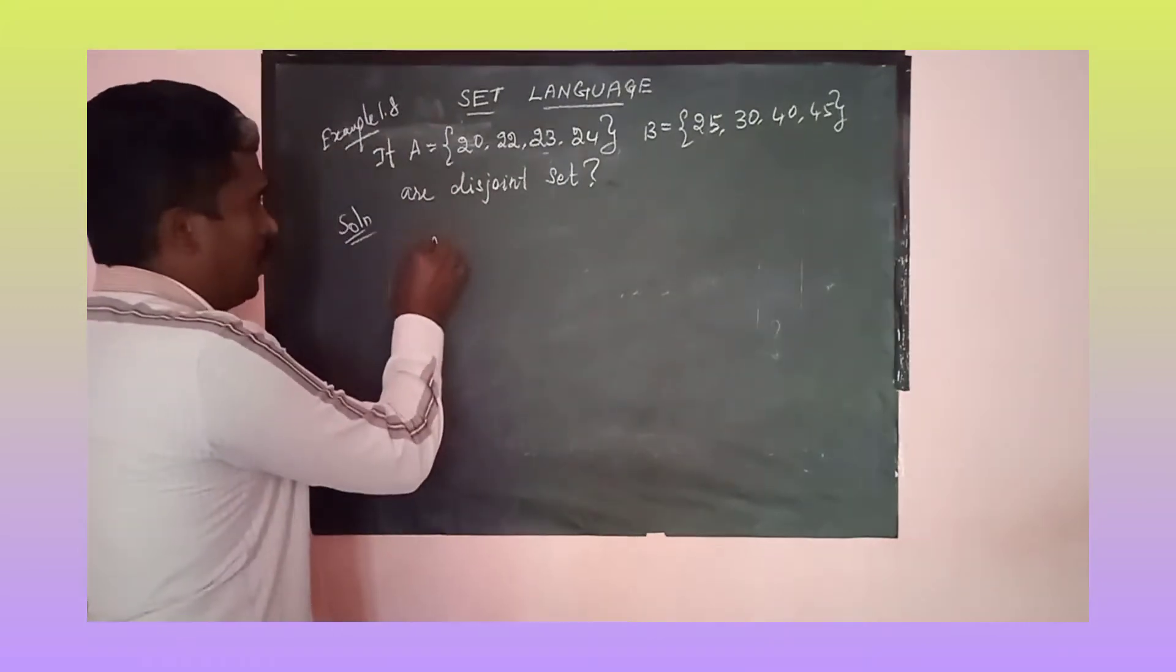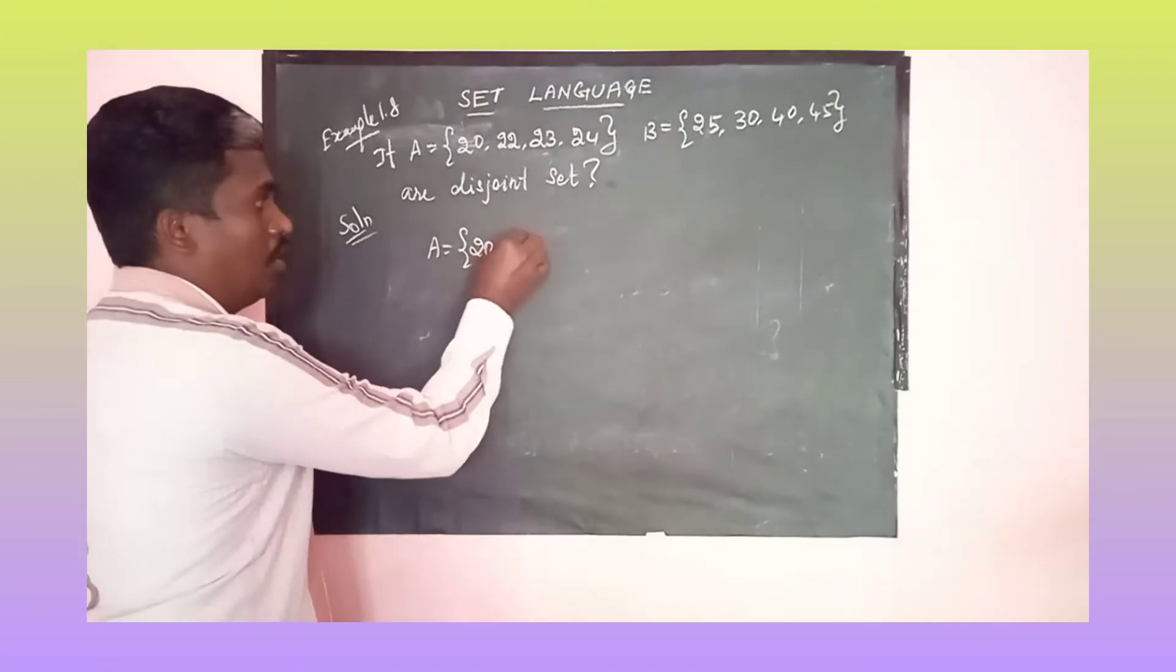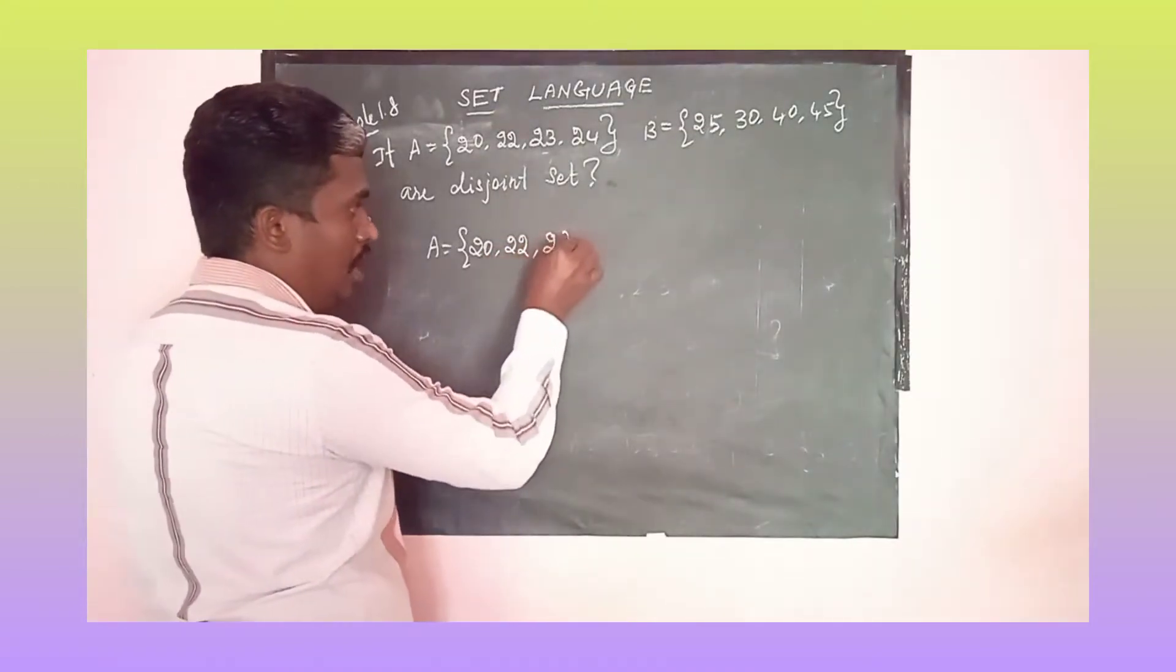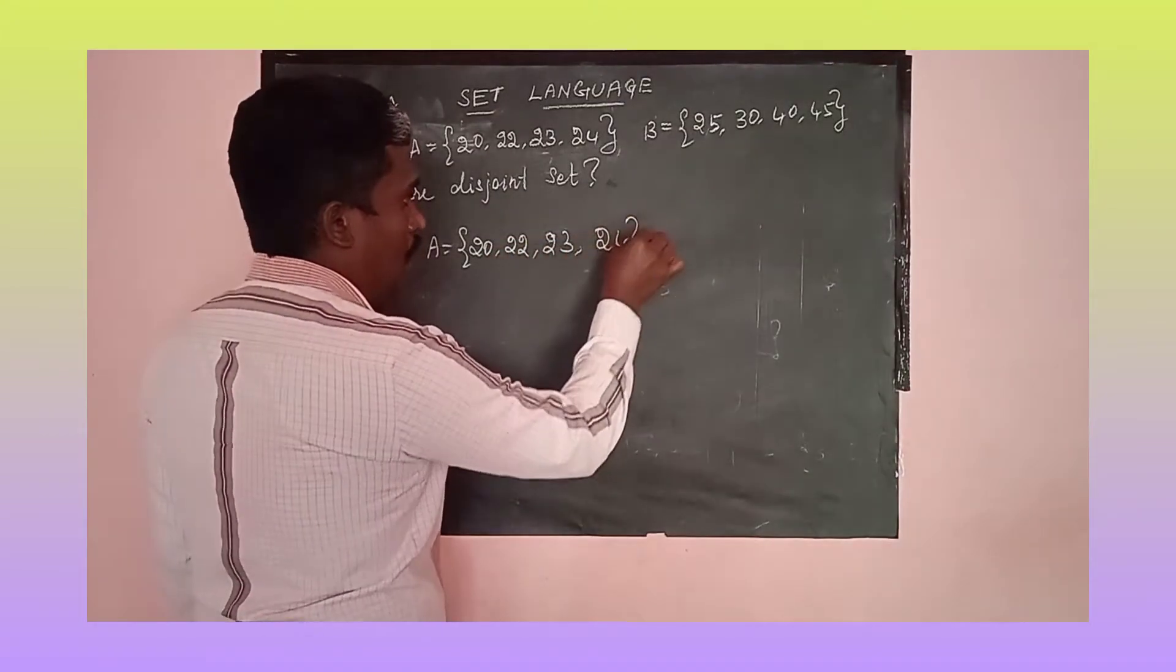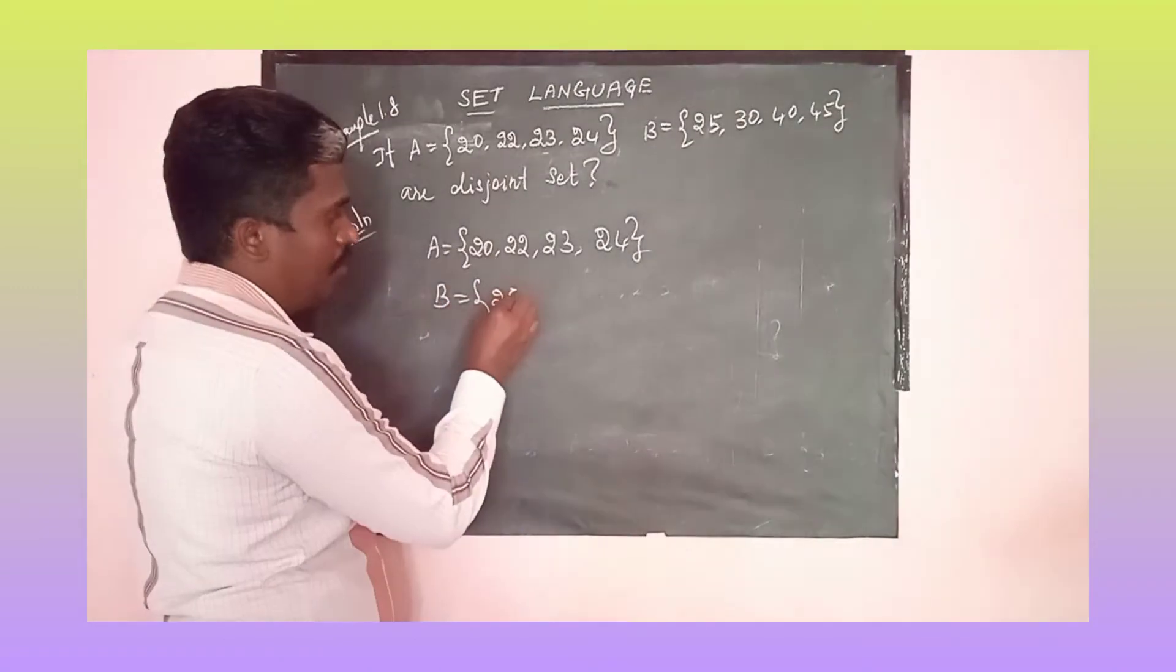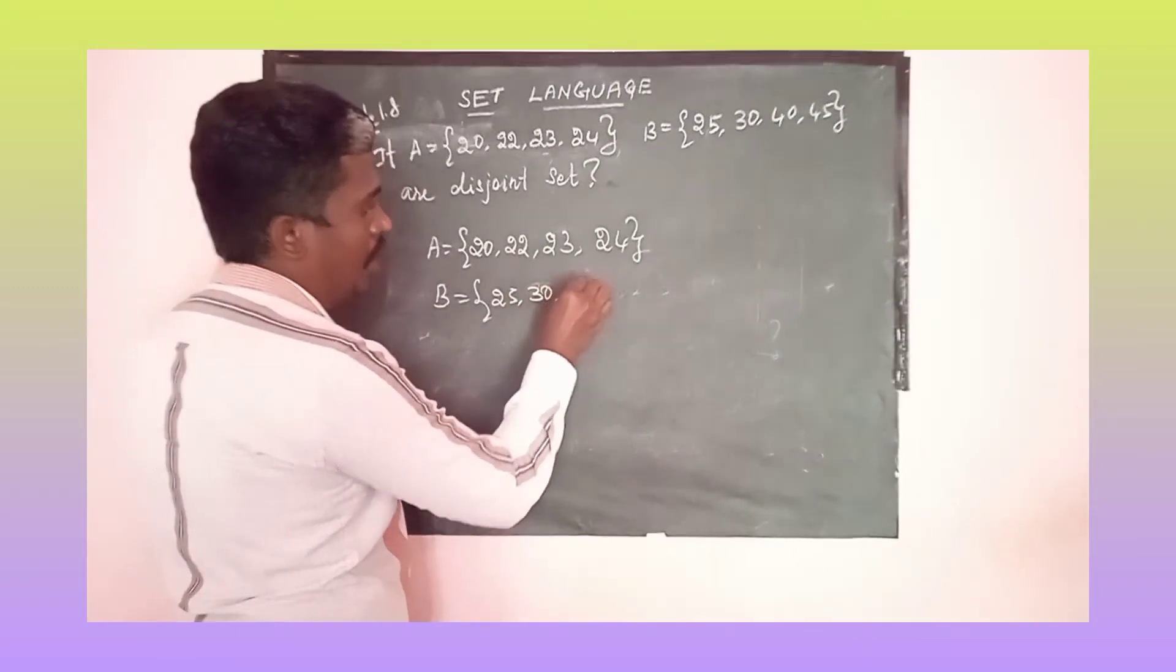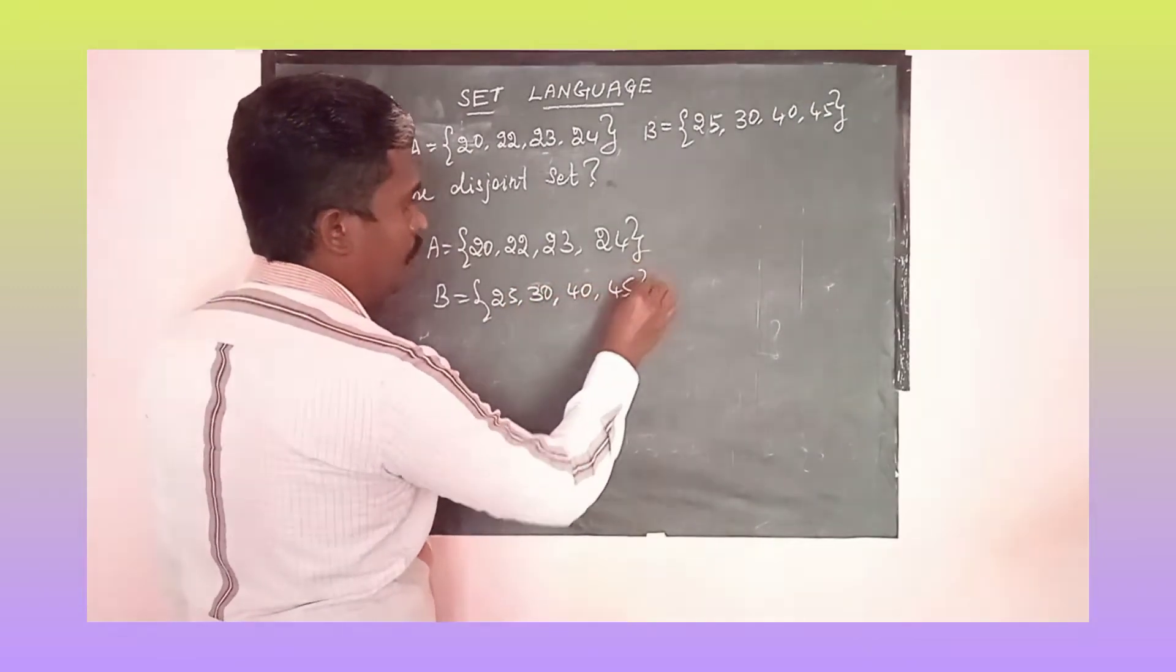First step: A is equal to 20, 22, 23, and 24. And B is equal to 25, 30, 40, and 45.